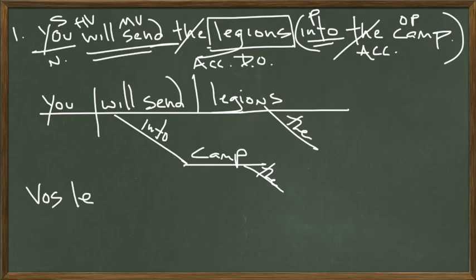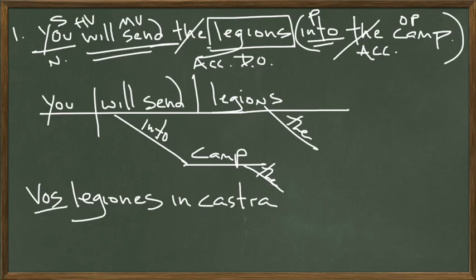Vos legiones — let's put them into the camp: in castra. Vos legiones in castra. Now we need 'you will send.' We started with vos, which means we have a plural you — this is like saying 'you all will send.' The verb is mito; mito means 'I send.' Since it's future and third conjugation, the vowel changes to mitē, and then we add the 'you' endings: mitētis. Vos legiones in castra mitētis — that's how you say 'you will send the legions into camp.'